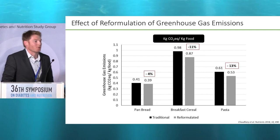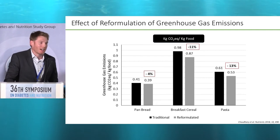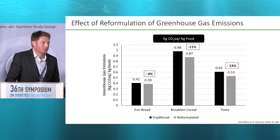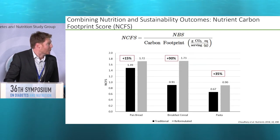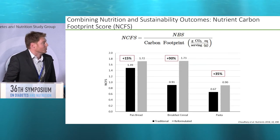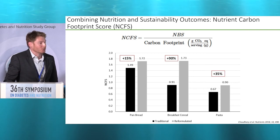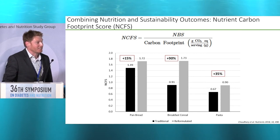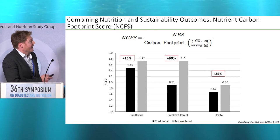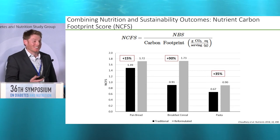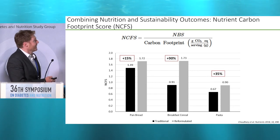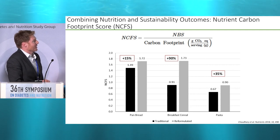Regarding the effect of reformulation on greenhouse gas emissions, there was a reduction of 4%, 11%, and 13% respectively. When we looked at the NCFS score — the nutrient balance concept as a ratio to the carbon footprint — appreciating that you're getting an increase in the numerator and at the same time a decrease in the denominator, it drove an increase of 15%, 90%, and 35%.